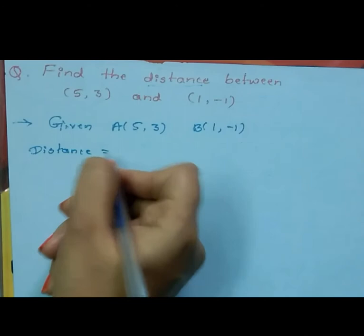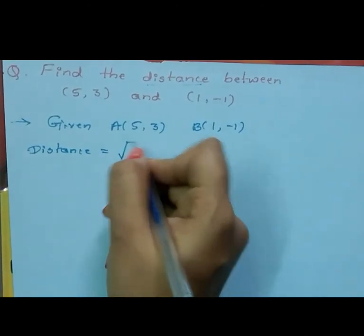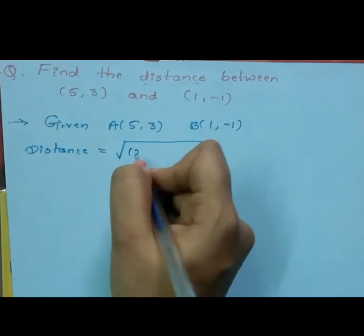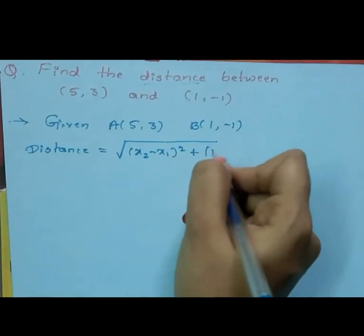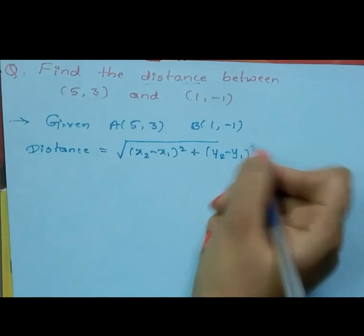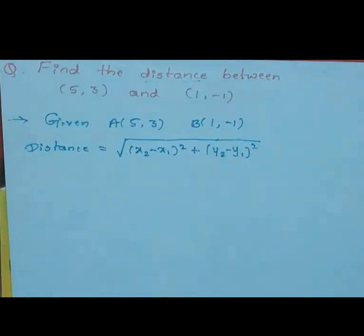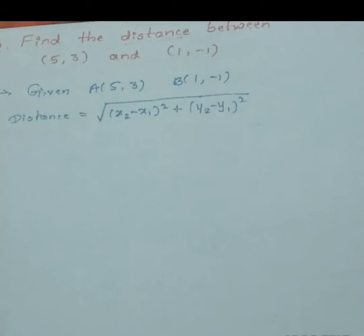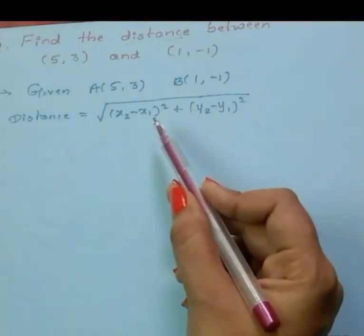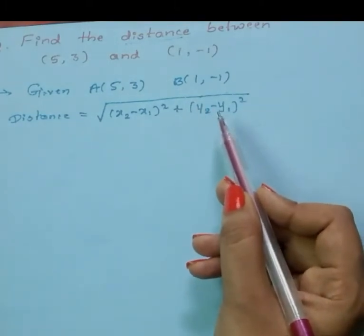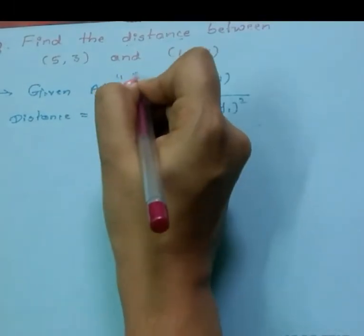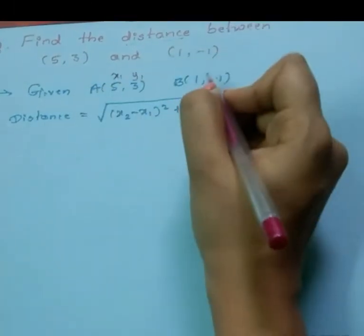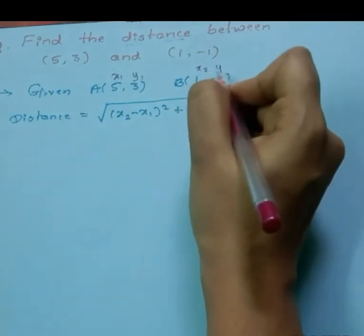To find the distance we have the formula: distance equals square root of (x2 minus x1) whole square plus (y2 minus y1) whole square. We take the first point as (x1, y1) and the second point as (x2, y2).